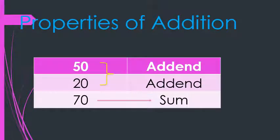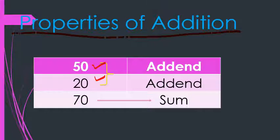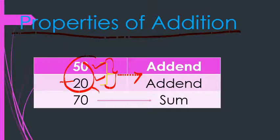So now next is properties of addition. You already know the term addition, right? But do you know the terms used for the numbers in an addition? The numbers we add are called addends. Suppose we add 50 and 20 — these both are called addends. And the answer is called the sum, which I have already told you.